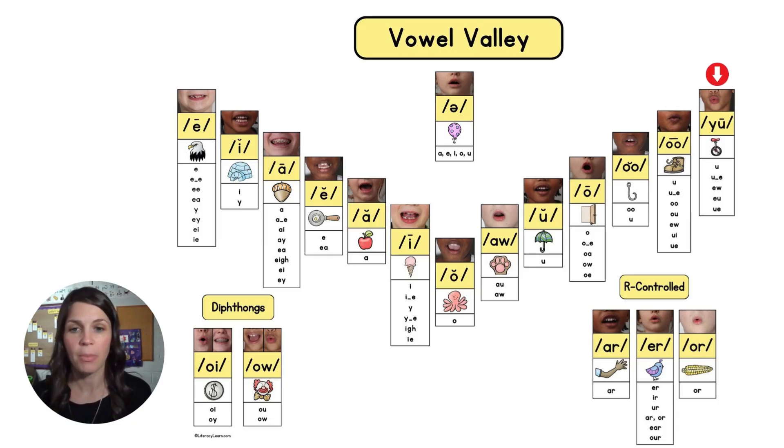Then at the top of our vowel valley we have the schwa sound which can say uh or sometimes i. Then we see our controlled vowels - these are vowels and the sounds that are produced by these are r, er, and or. And then we have diphthongs, which is another category of vowels, and the two diphthong sounds in English are oy and ow. Those are the vowel sounds.